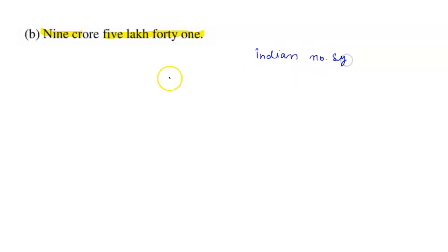So first we will write here according to the Indian number system. Here: ones, tens, hundreds, thousands, ten thousands, lakh, ten lakh, and crore.